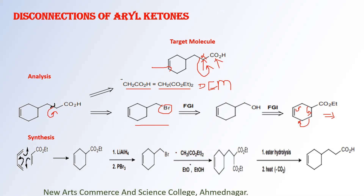Take diethyl malonate and treat it with sodium ethoxide in ethanol to abstract this proton. Once the carbanion is generated, it acts as a nucleophile and attacks the carbon bearing Br, displacing the leaving group, to give the alkylated product. In the target molecule, you don't want two ester groups, only one acid functional group. So hydrolyze by basic ester hydrolysis to convert COOEt to COOH. This gives a 1,3-dicarboxylic acid, so by simple heating you can decarboxylate one COOH group to give the target molecule.